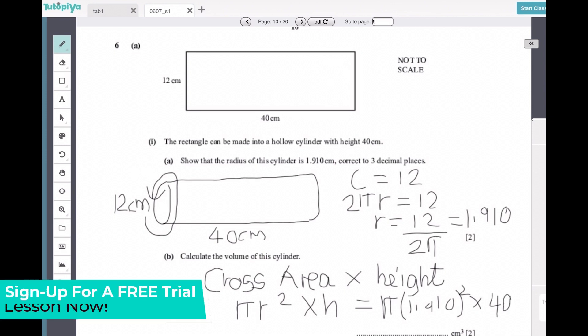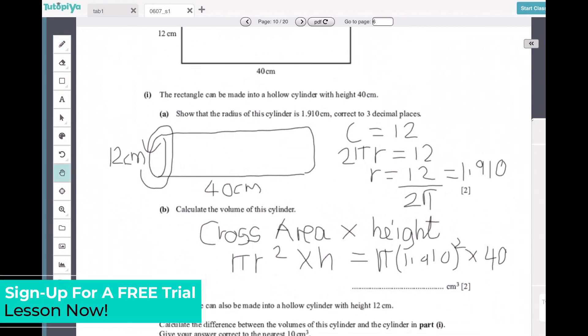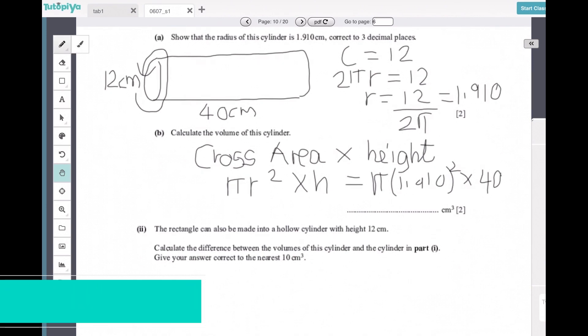That times by 40, which is my height in this case. Plugging all that into my calculator obtains me the value of 458 centimeter cube. So ideally in IGCSE, they are looking for three significant figures, so 458 would be ideal.